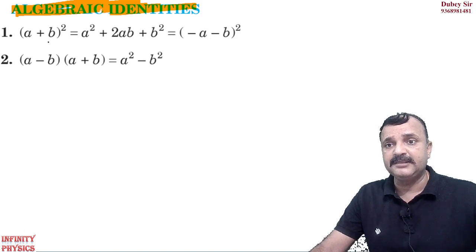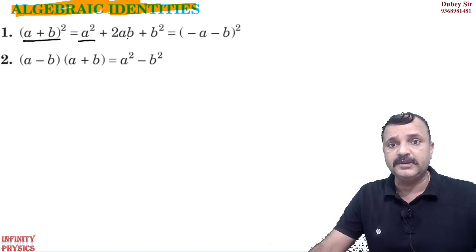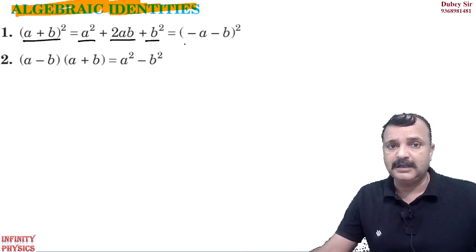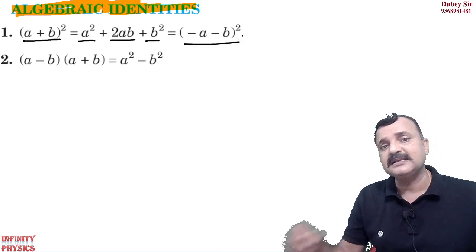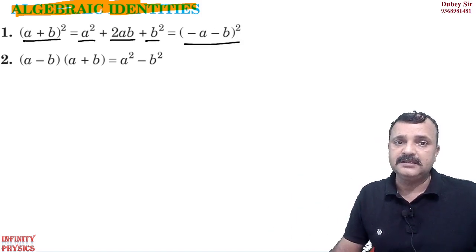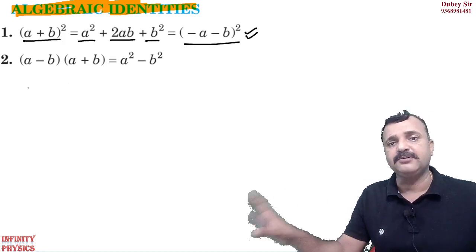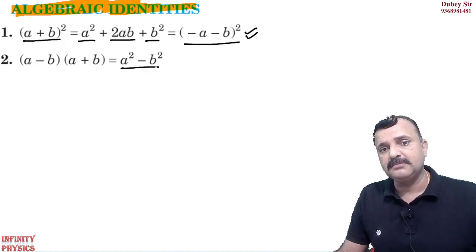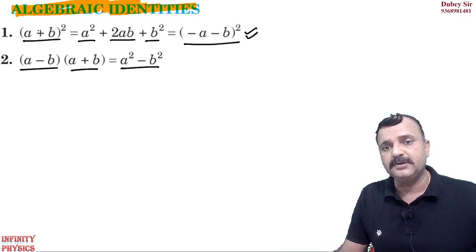The first formula: (a + b) whole square is equal to a square plus 2ab plus b square. This is something all of you have learned around 9th class. The other formula is a square minus b square is equal to (a + b)(a − b).